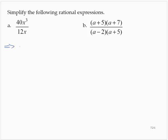So we have 40x cubed over 12x. 40 factors as 2 times 2 times 2 times 5, and x cubed factors as x times x times x. 12x factors as 2 times 2 times 3 times x.